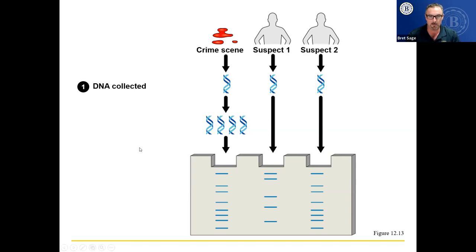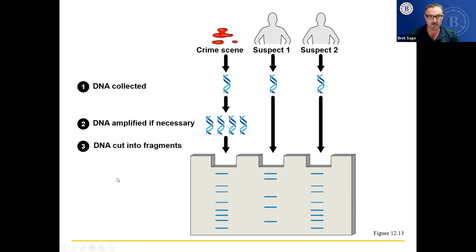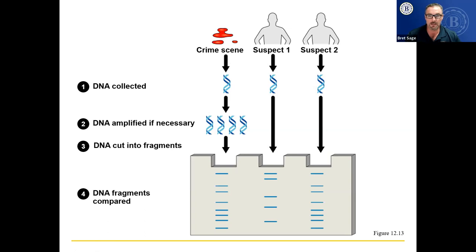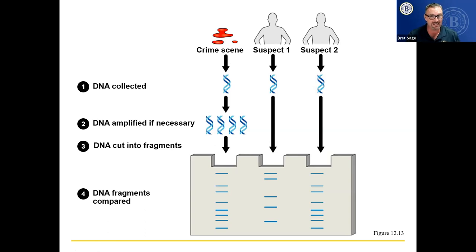You collect the DNA from the crime scene and from the suspects. DNA is amplified if necessary — if there's not enough DNA in the sample, you replicate it, then run it through a gel. You cut it into fragments. The DNA fragments are compared, and in this case it says suspect two's DNA matches the DNA found at the crime scene. It's usually a pretty good indication that if somebody claims they weren't there and you find their DNA there, they were lying about not being there — unless there's suspicion that the DNA was planted, which is what happened in the O.J. Simpson case back in 1995.